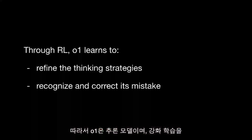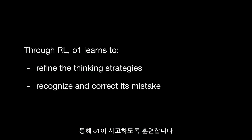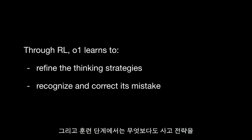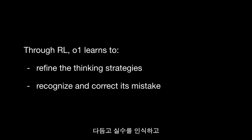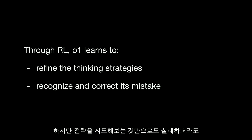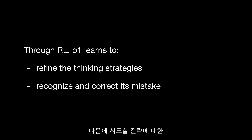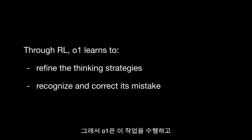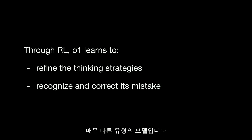O1 is a reasoning model, and we train O1 to think with reinforcement learning. During the training phase, it learns, among other things, to refine the thinking strategies and recognize and correct its mistakes. So when O1 attempts to solve a very difficult problem, it may not get to the working strategy in one go. But just by trying a strategy, even if it's unsuccessful, can give some cues as to what to try next. And so O1 does this, and eventually it gets to the better strategy. So it's very patient, and it's a very different type of model.